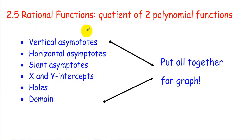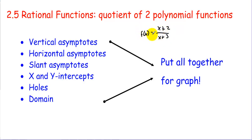Section 2.5: Rational Functions. A rational function is a quotient of two polynomial functions. For example, f(x) = (x + 2) / (x + 3). With rational functions, we're going to talk about vertical asymptotes, horizontal asymptotes, slant asymptotes, x and y-intercepts, holes, and domains — and we're going to put that all together to graph the function.